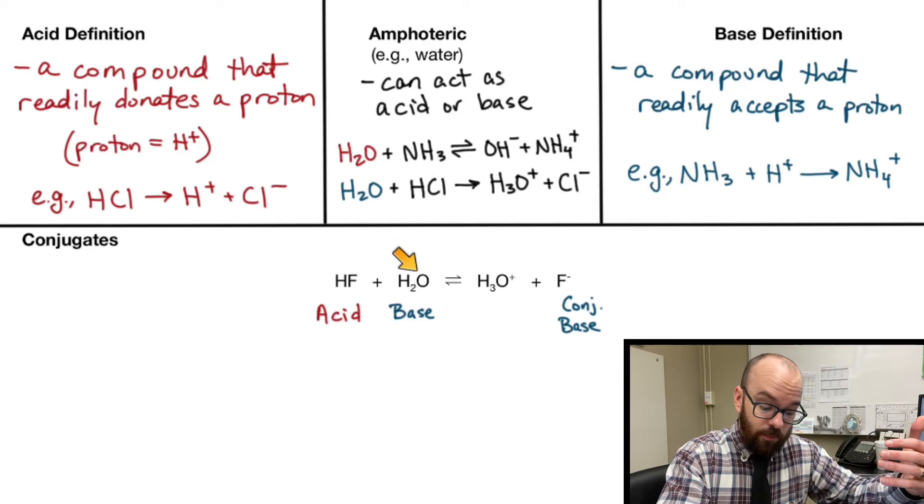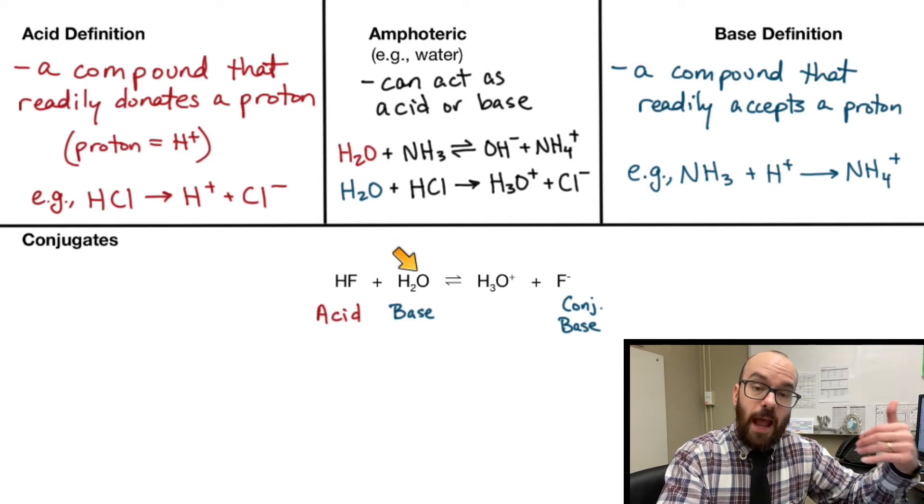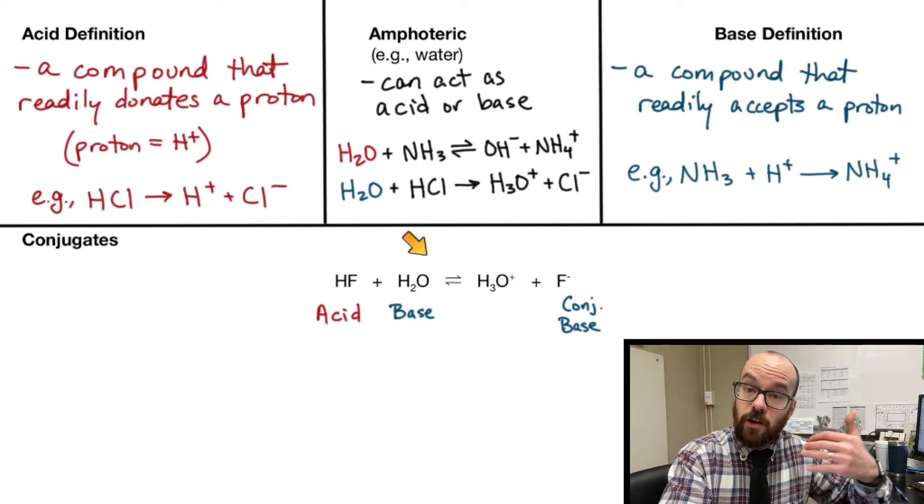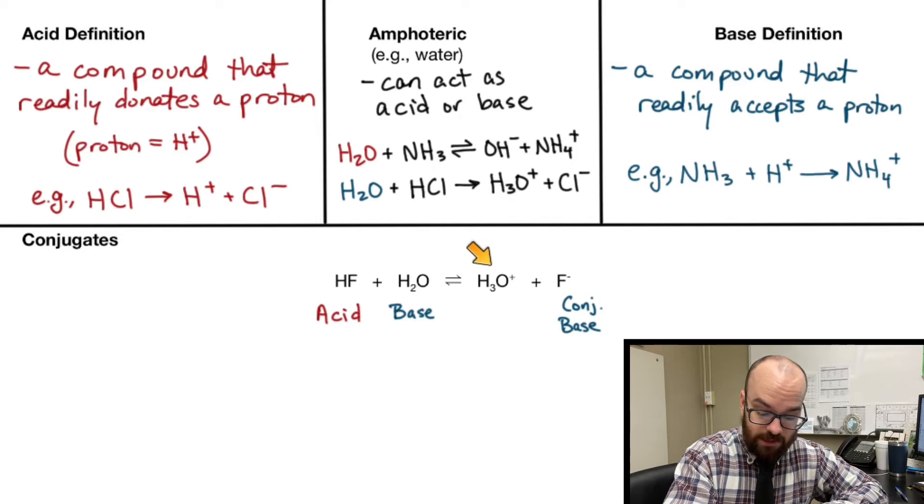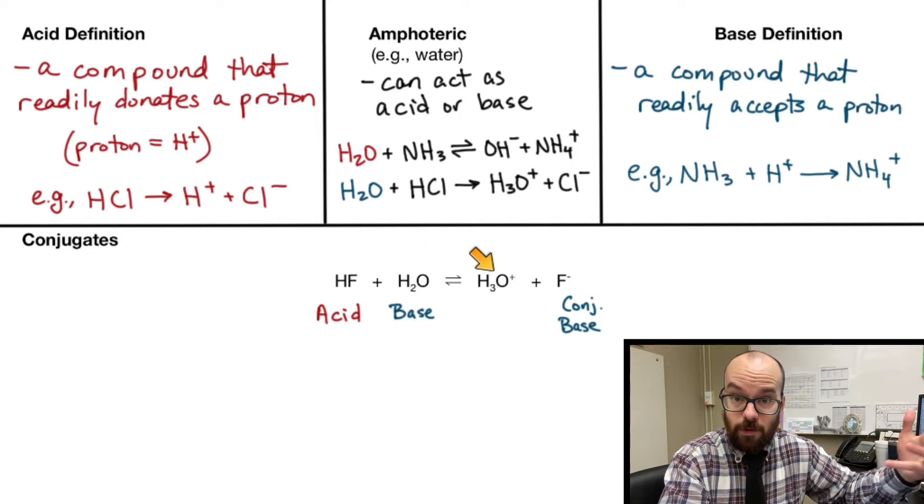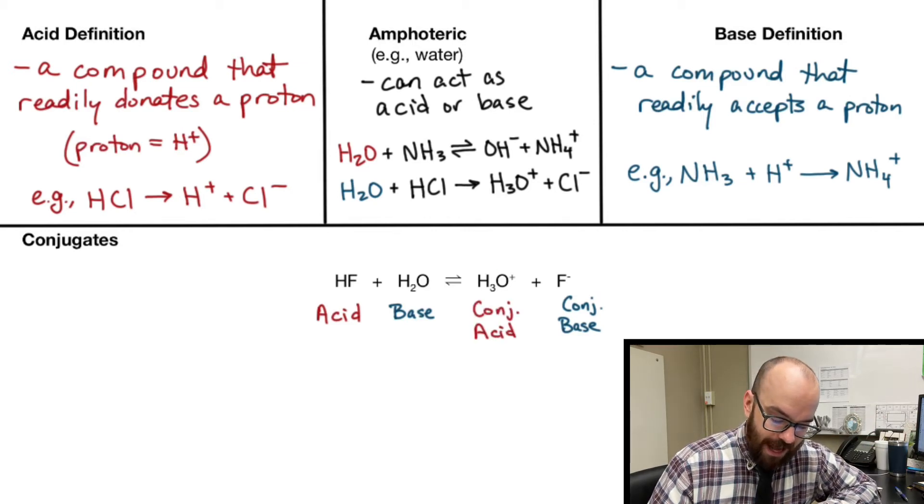Now, to find the conjugate acid, take your base, which in this case is H2O, and add a hydrogen to it. Now you should have another species in solution on the right side that looks like the base but with the hydrogen added. That's, of course, hydronium, H3O+, and so that would be our conjugate acid.